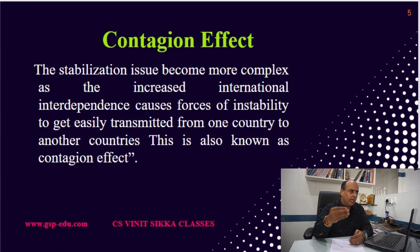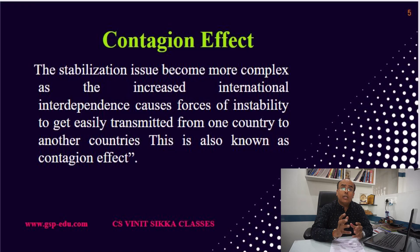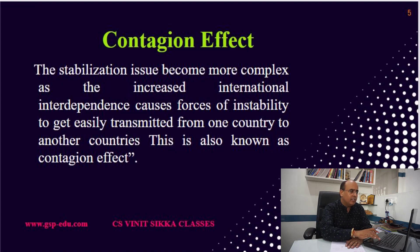So when the instability caused in other countries gets transmitted into our country, this is called the contagious effect between the countries, and this needs to be controlled through stabilization function. Aur government isi function ko control kerti hai stabilization activities ke through. Tab jaakar government in sari cheezon ko stabilize kar paati hai — government ka ek function economy ke andar stability lana aur maintain karna bhi hota hai.